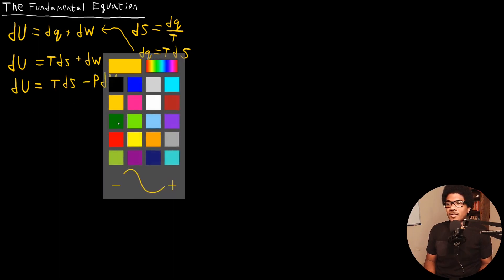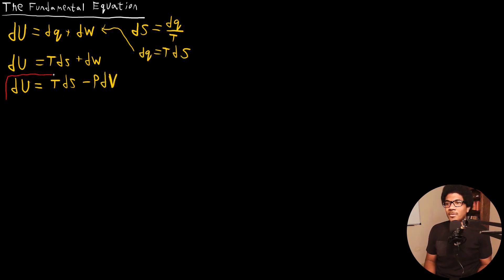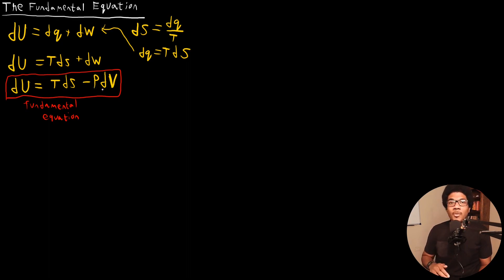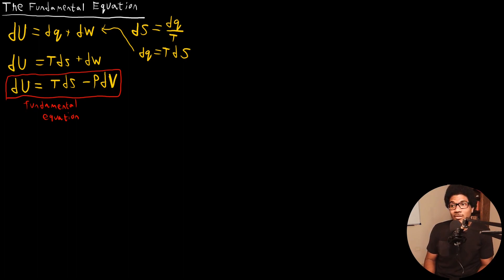So this is the fundamental equation. It's a re-expression of the first law of thermodynamics, but now expressed in terms of entropy, so we can use this same machinery to predict spontaneity within the first law of thermodynamics. What makes this really useful is that since all of the other thermodynamic potentials that we've discussed rely on a change in internal energy, we can re-express those in terms of the fundamental equation as well.